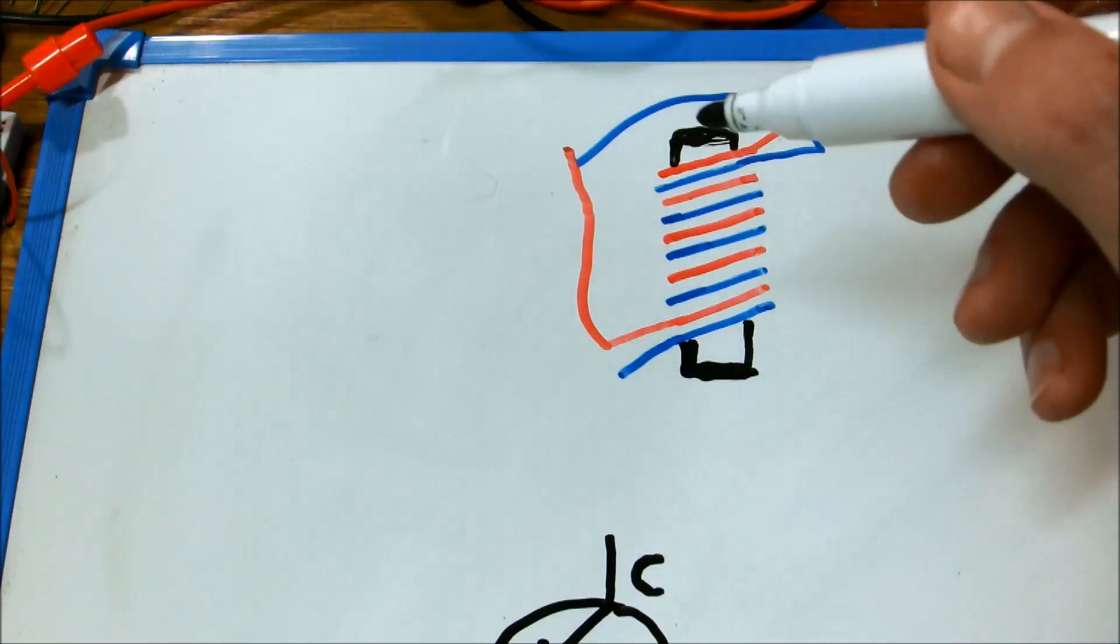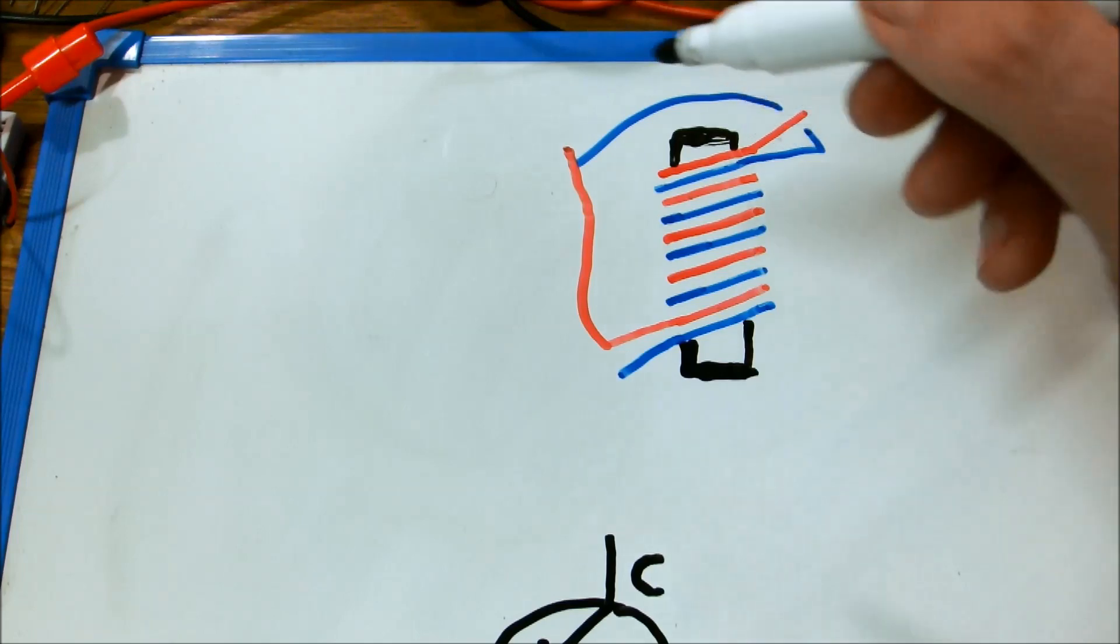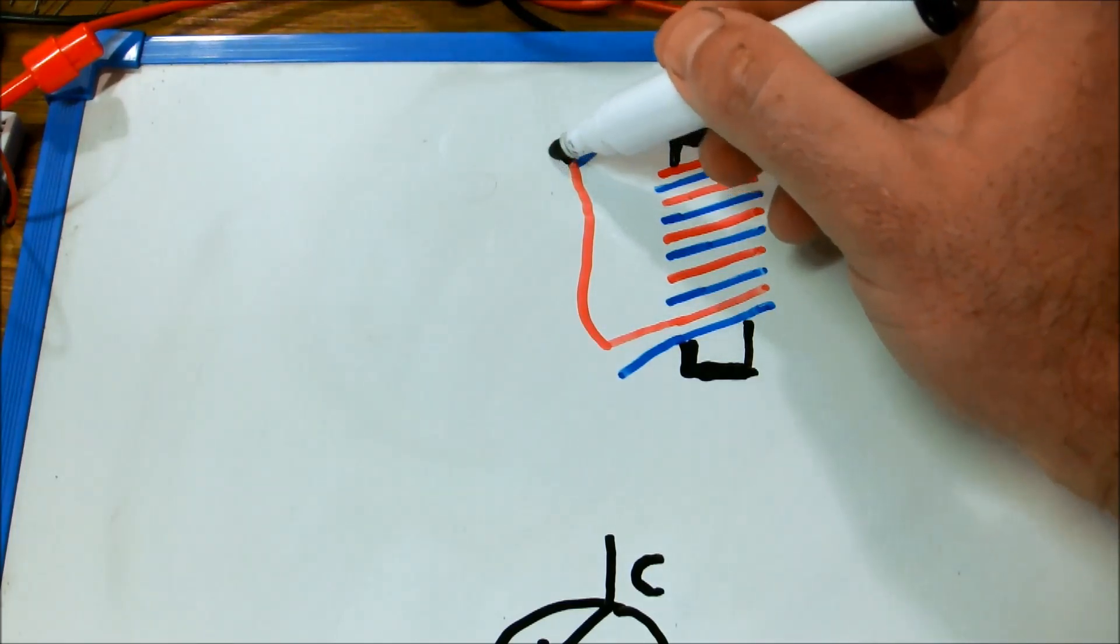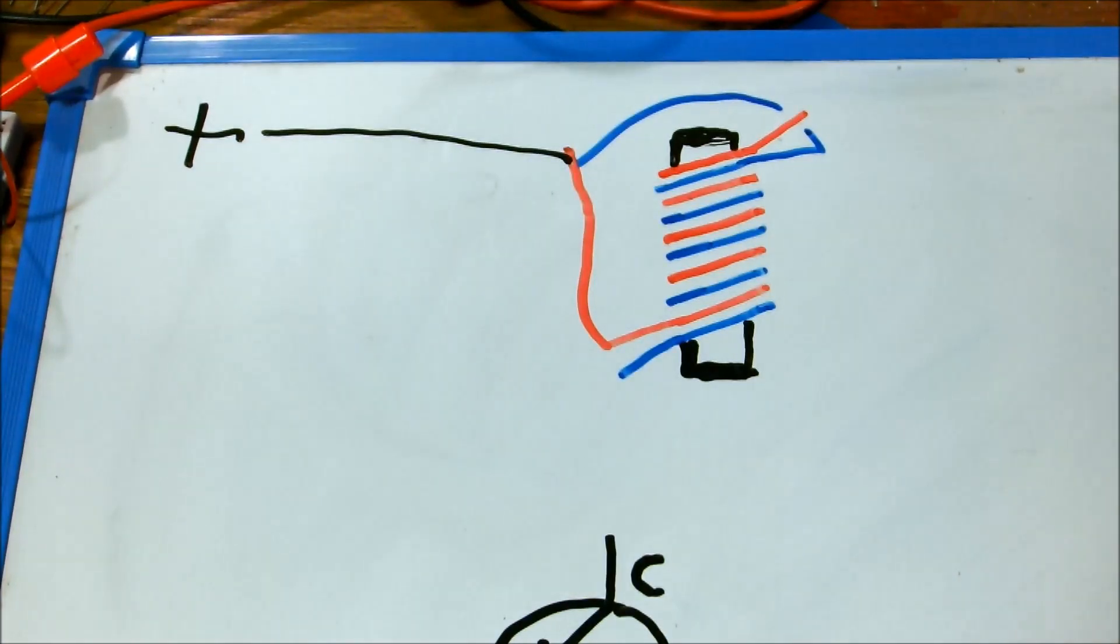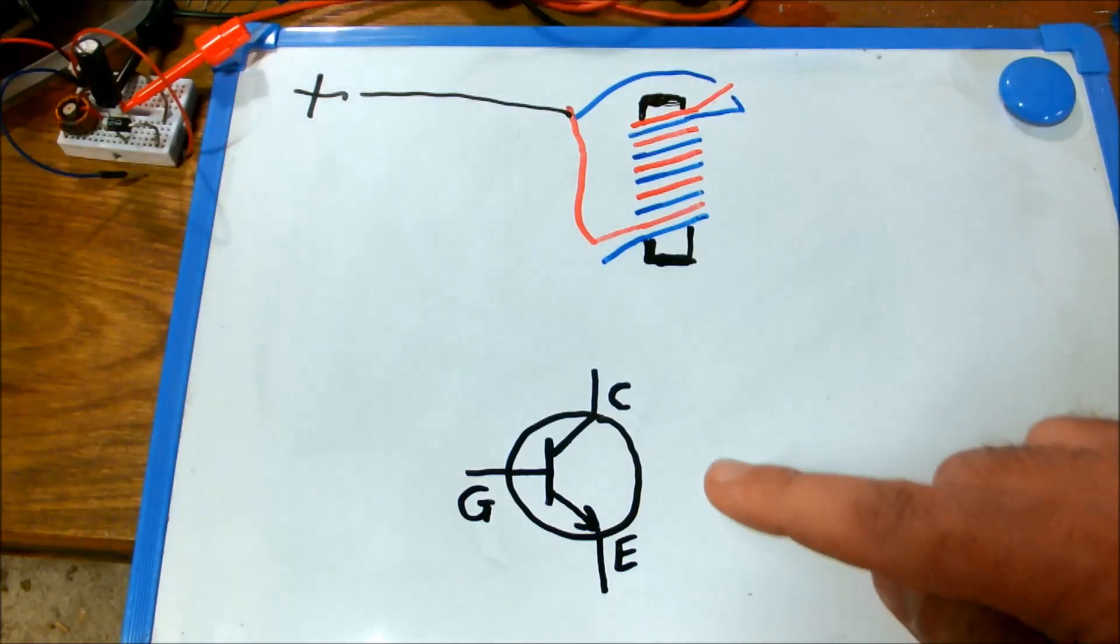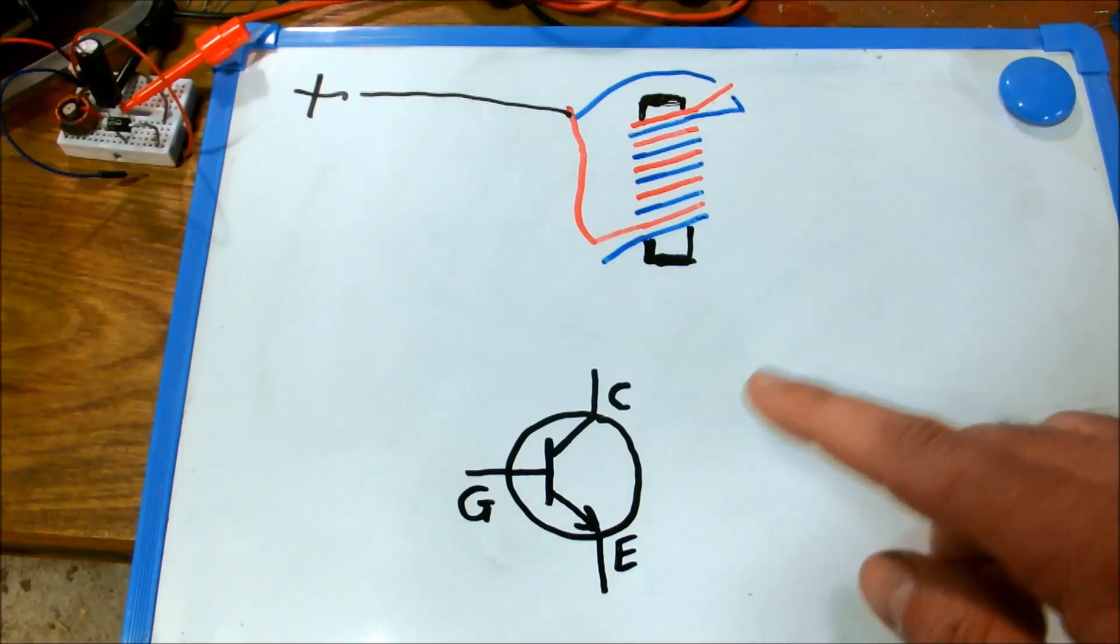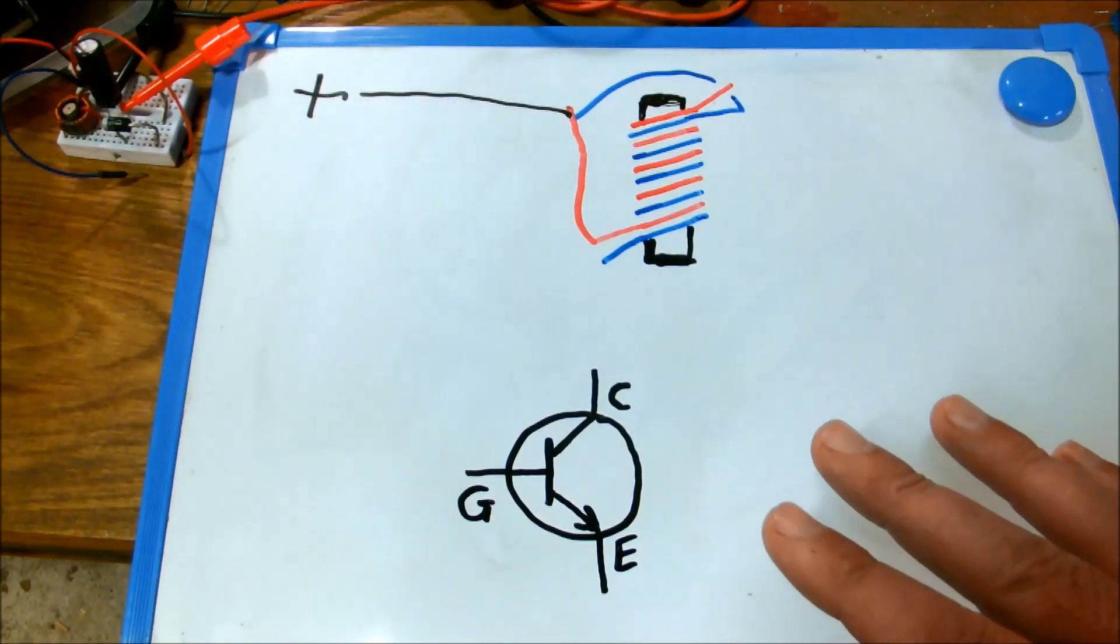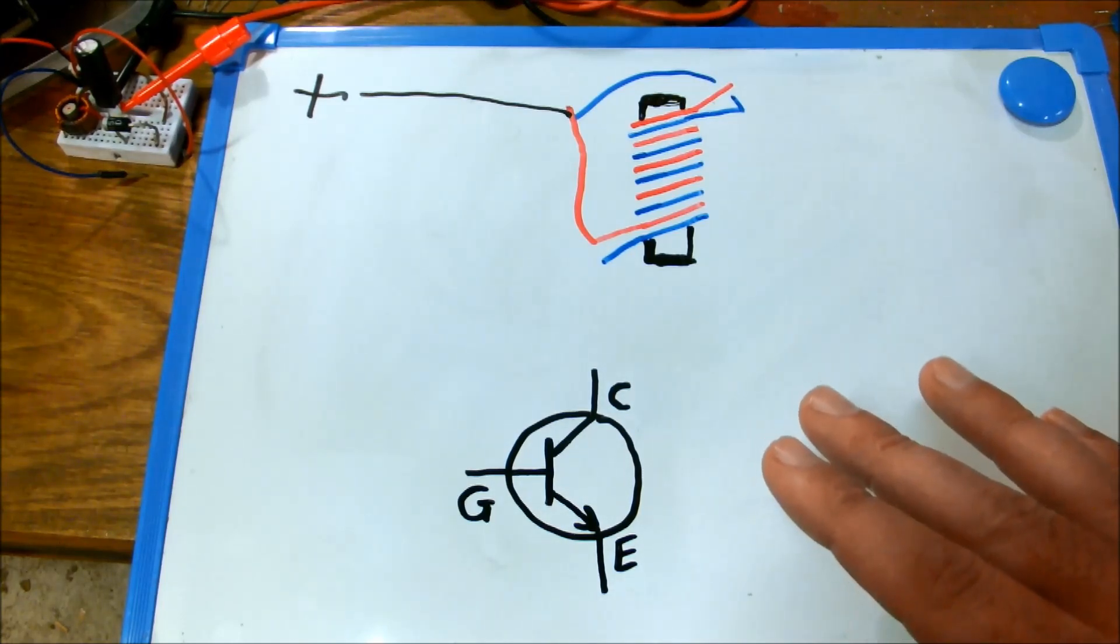The more common Joule Thief design uses an NPN type transistor. That point would go to the positive power input. Here I have drawn an NPN type transistor. I'm going to first draw out the circuit the conventional way and then I'll show how my circuit differs from that.